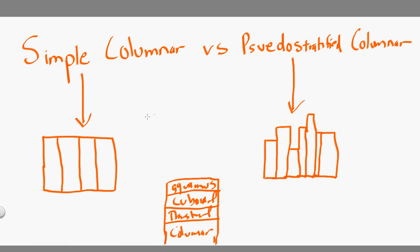With regard to the columnar, you have two different situations: simple columnar and pseudo-stratified columnar, and there are two differences between these two. The first is the height of the epithelial cells themselves. The height on the simple columnar are all the same. The height of the pseudo-stratified columnar is different — one cell is tall, the next one is taller, the next one is shorter. This is the first difference between the two.